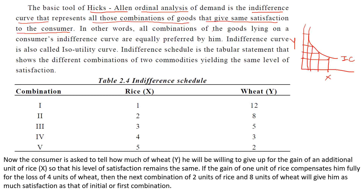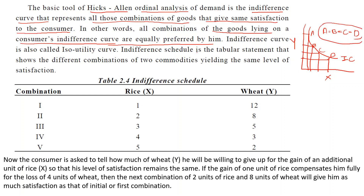In other words, all combinations of goods lying on the consumer's indifference curve are equally preferred by him. Suppose the combinations are A, B, C, D — all these are equal to each other; they are equally preferred. The indifference curve is also called an iso-utility curve because the utility or satisfaction derived from these combinations is the same.